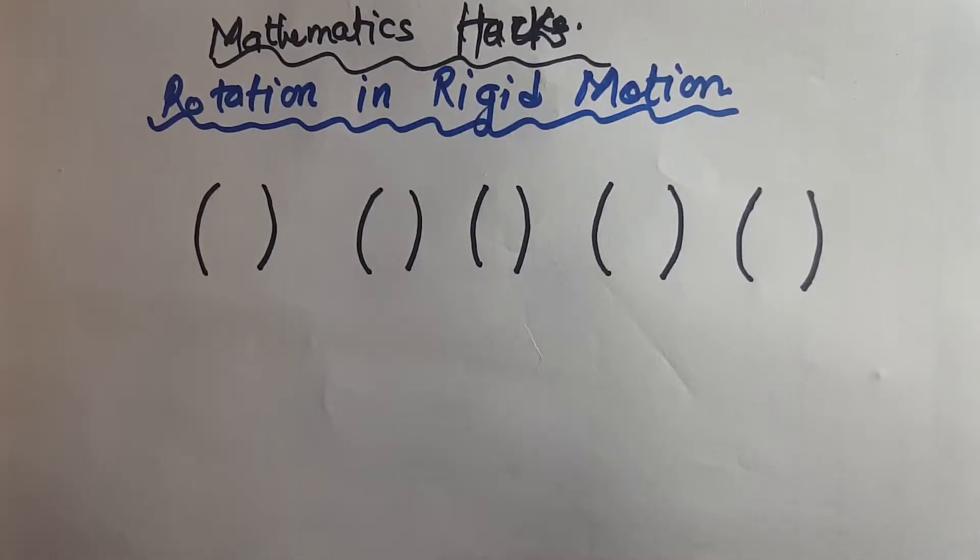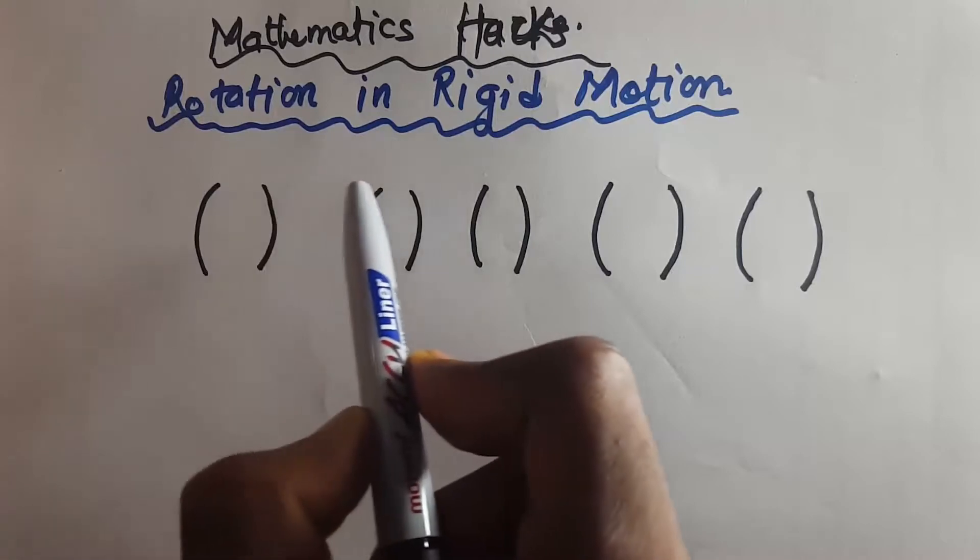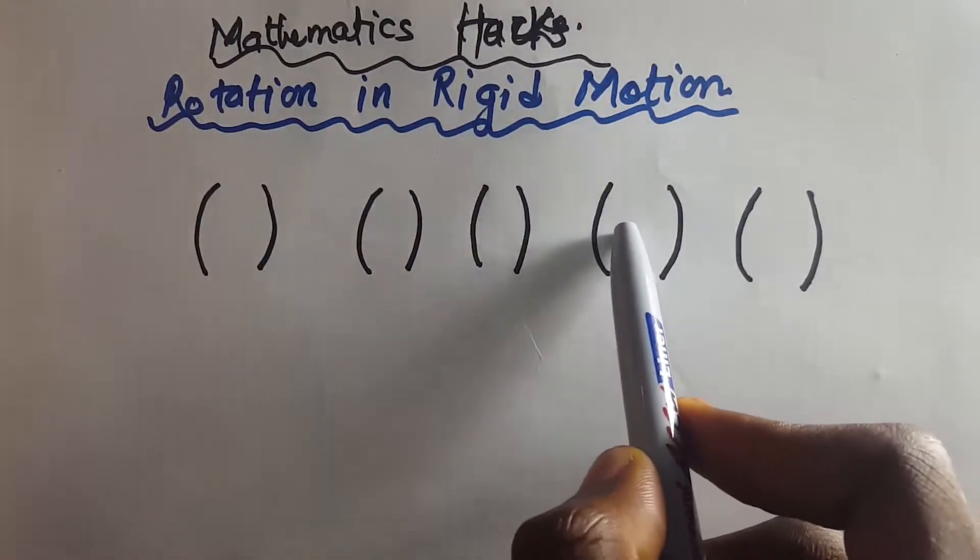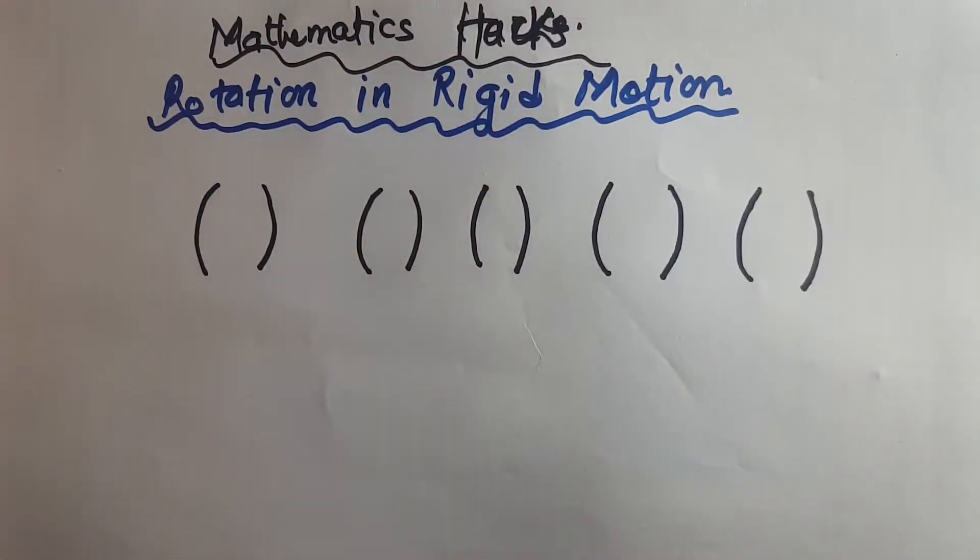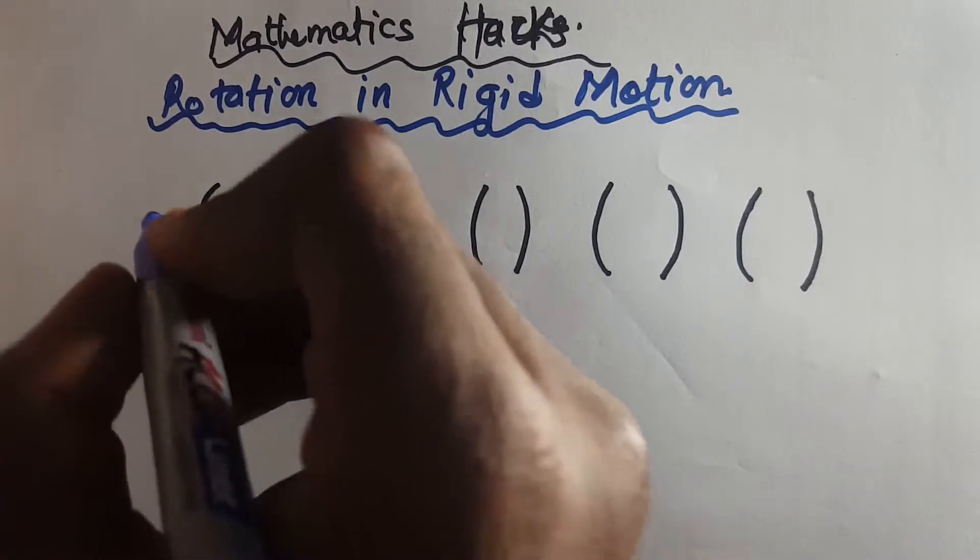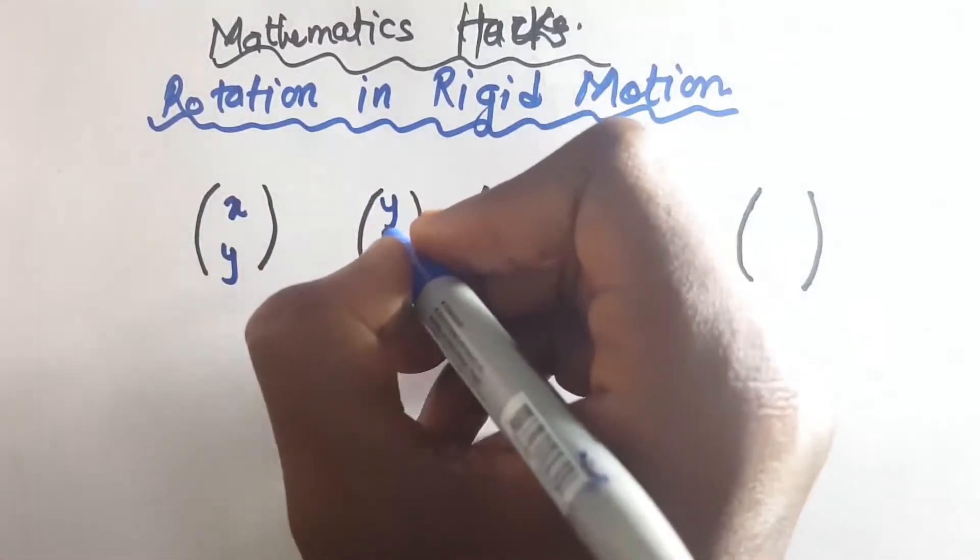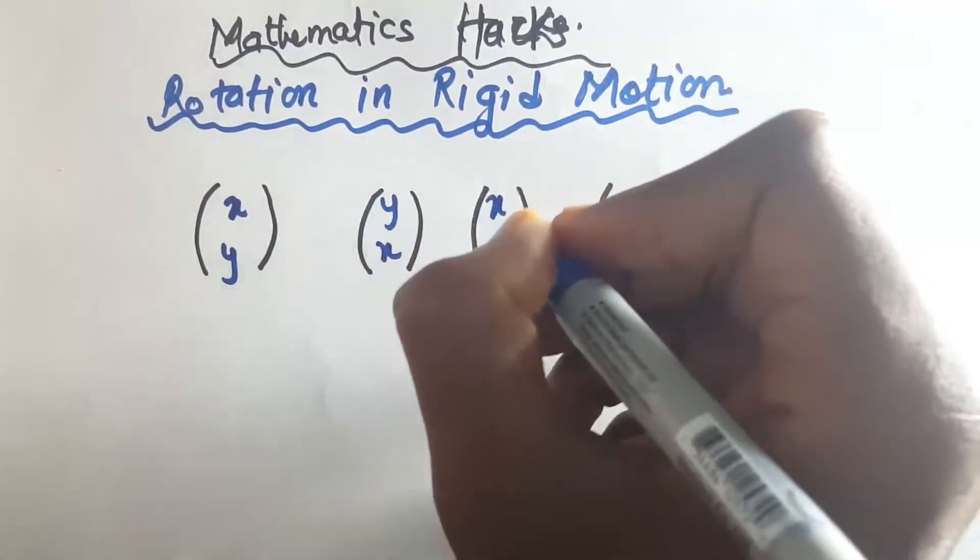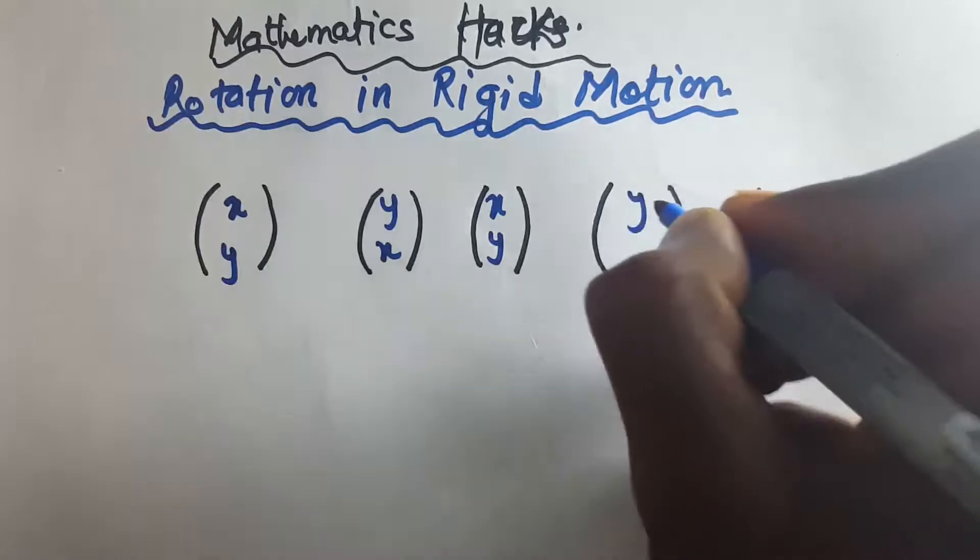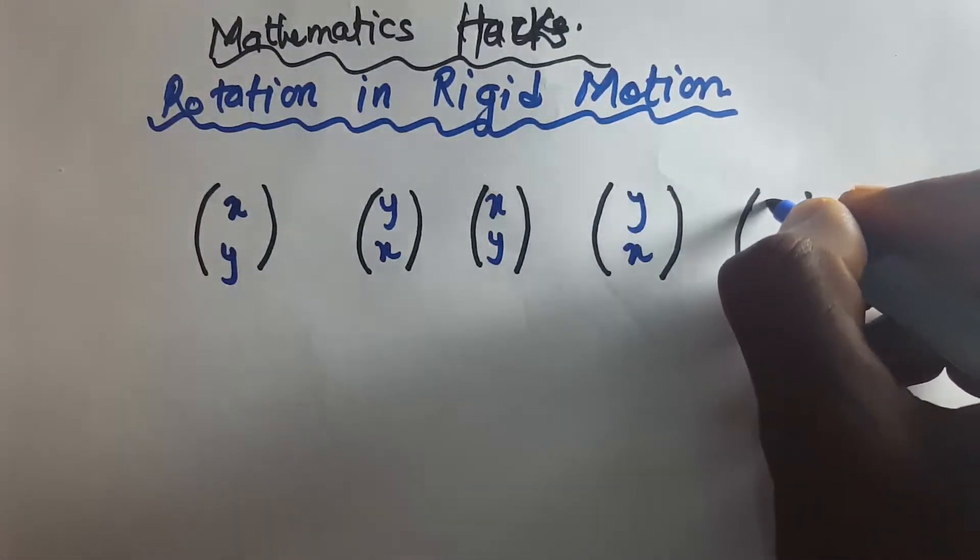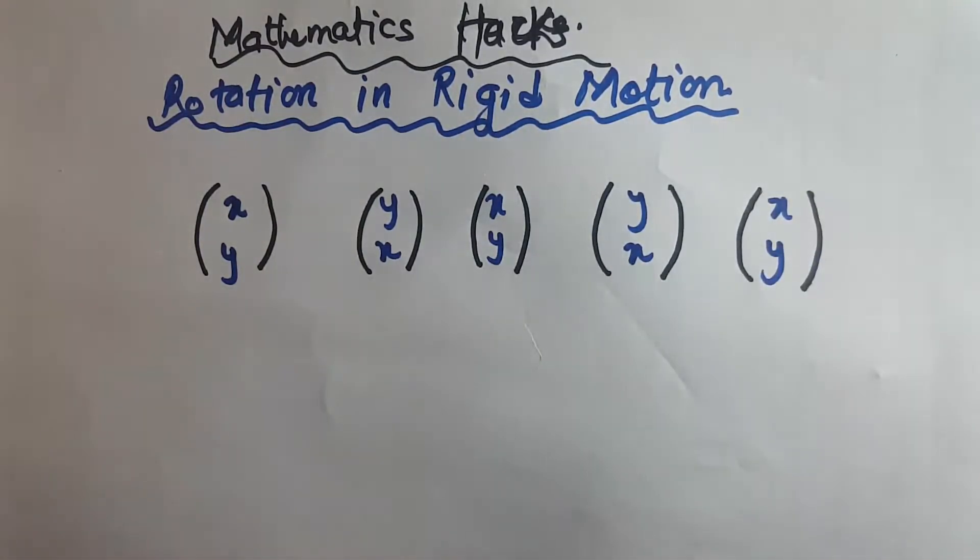Let's dive in. First of all, you need five brackets: one, two, three, four, five. Then the next thing you do is you write your x and your y. You have x here, y here, y here, write y here, x here. X, Y, Y, X, X, Y.